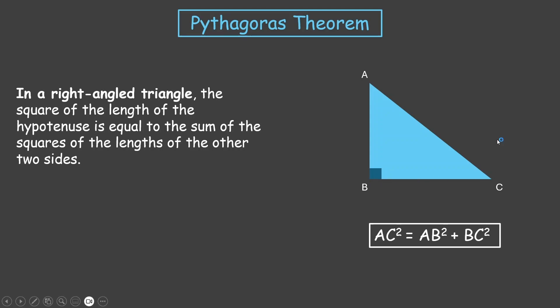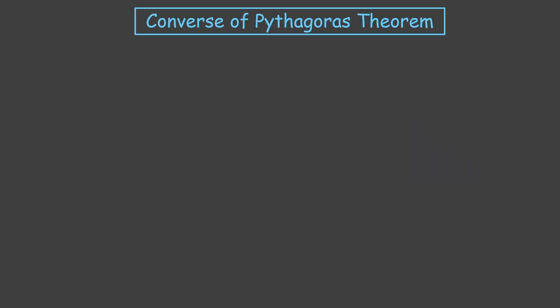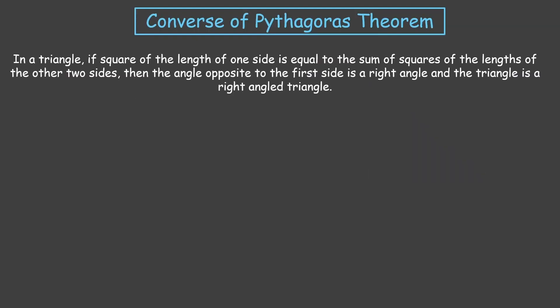Now, do you think that the converse of Pythagoras would also be true? Let us look into it. The converse of Pythagoras theorem says that in a triangle, if the square of the length of one side is equal to the sum of the squares of the lengths of the other two sides,